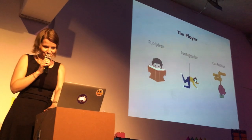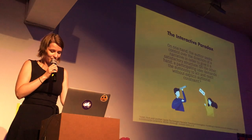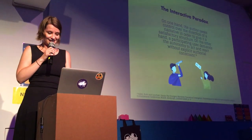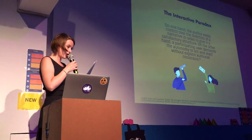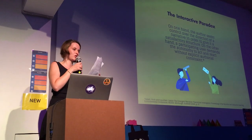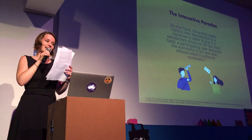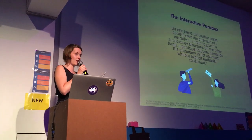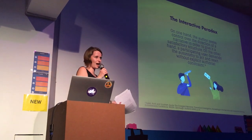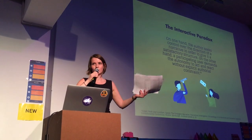This brings us to the very first problem with storytelling in games, which is called the interactive paradox. On one hand, the author seeks control over the direction of the narrative in order to give it a satisfactory structure. On the other hand, a participating user demands the autonomy to act and react without authorial constraint. So there's basically a war happening between the writer and the player, who both wrestle for control.